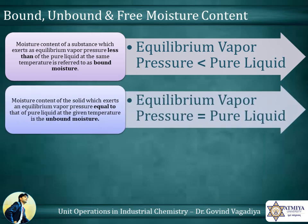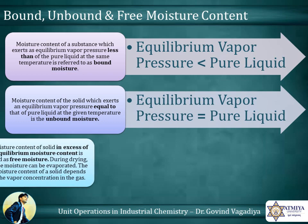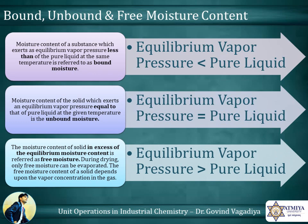Unbound Moisture: moisture content of the solid which exerts an equilibrium vapor pressure equal to that of pure liquid at the given temperature is the unbound moisture. Free Moisture: the moisture content of a solid in excess of the equilibrium moisture content is referred to as free moisture.